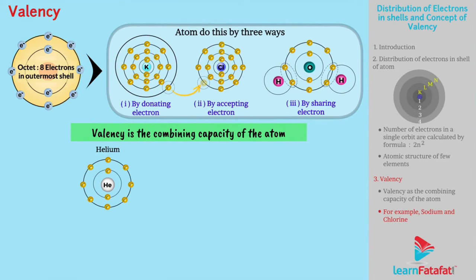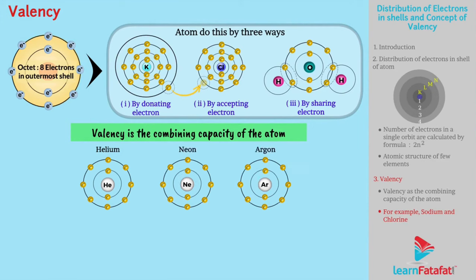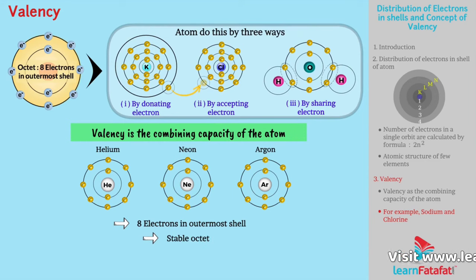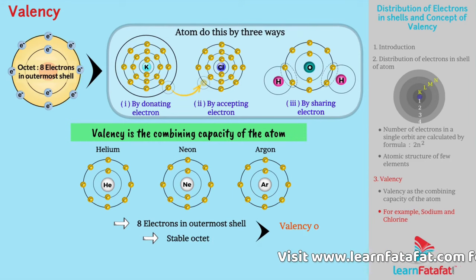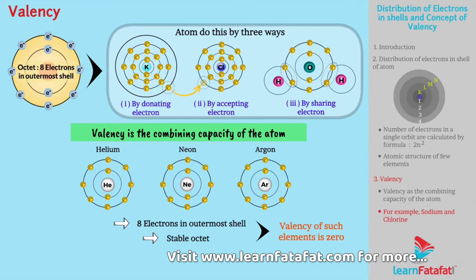Elements like helium, neon, and argon have 8 electrons in the outermost shell — that is, they have a stable octet. Hence, the valency of such elements is 0.